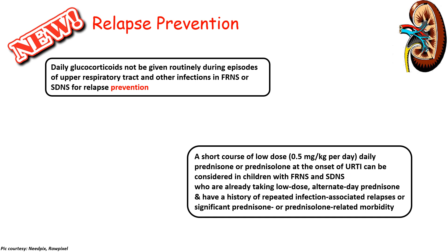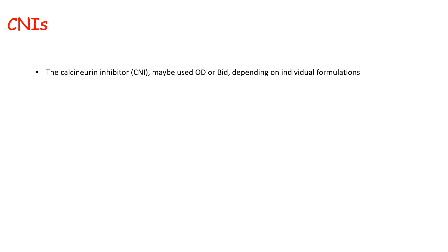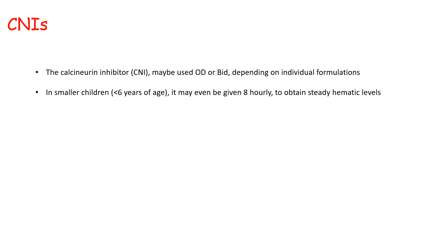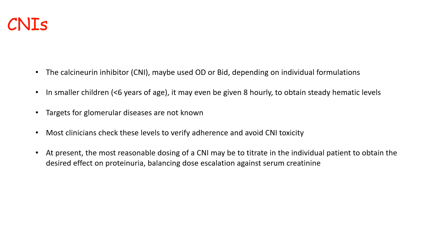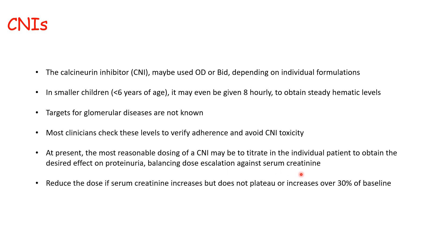Calcineurin inhibitors may be used once or twice daily depending on individual formulations; in smaller children they can even be used 8-hourly. Target blood levels for glomerular diseases are not well established — most clinicians check levels to verify adherence and avoid CNI toxicity. The most reasonable dosing is to titrate in the individual patient to obtain desired effect on proteinuria, balancing dose escalation against serum creatinine, and reduce the dose if serum creatinine increases but does not plateau or increases more than 30% above baseline.